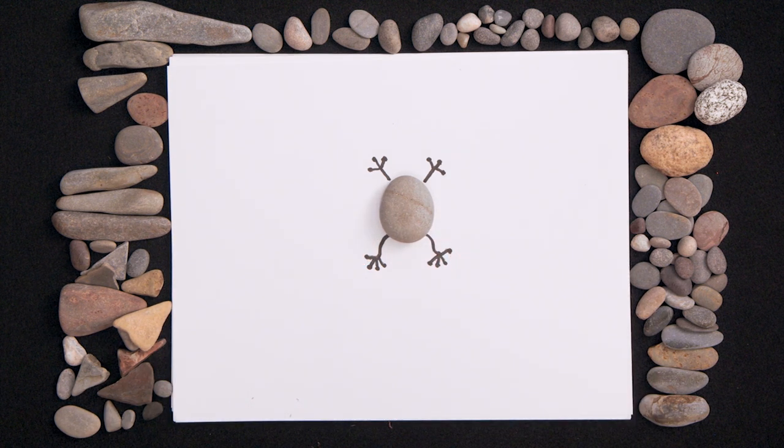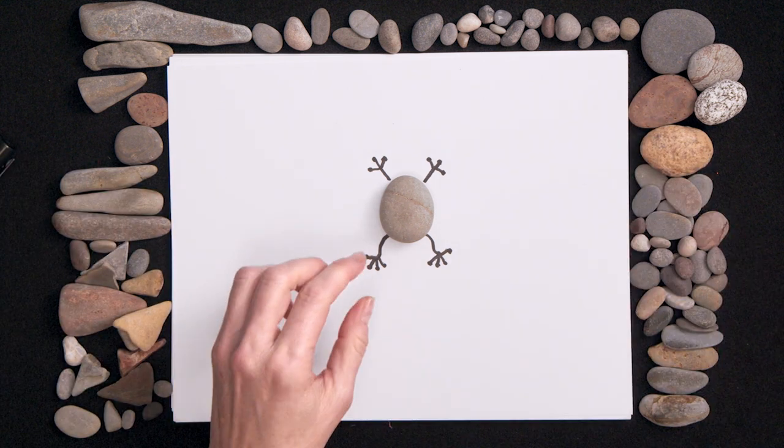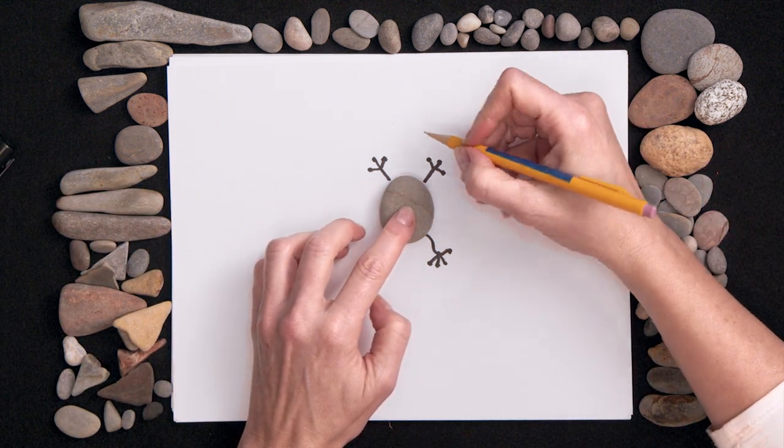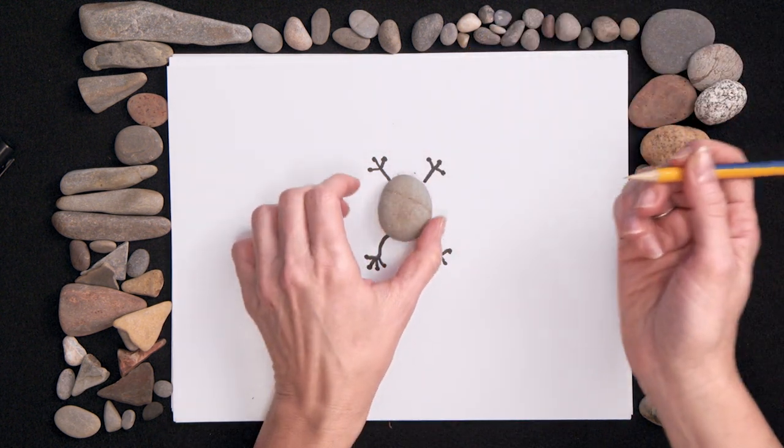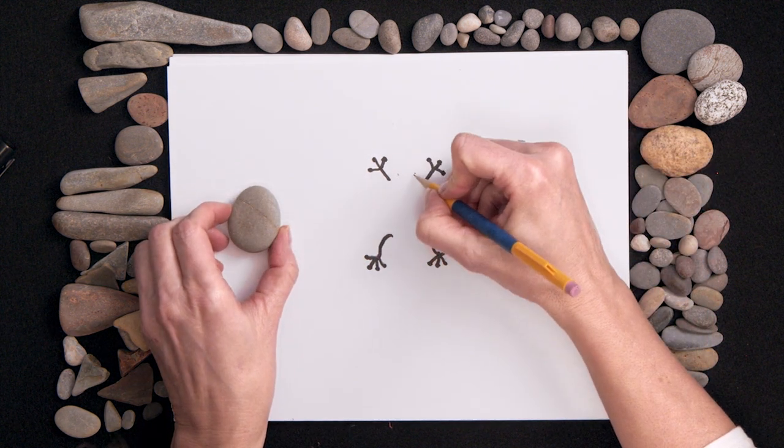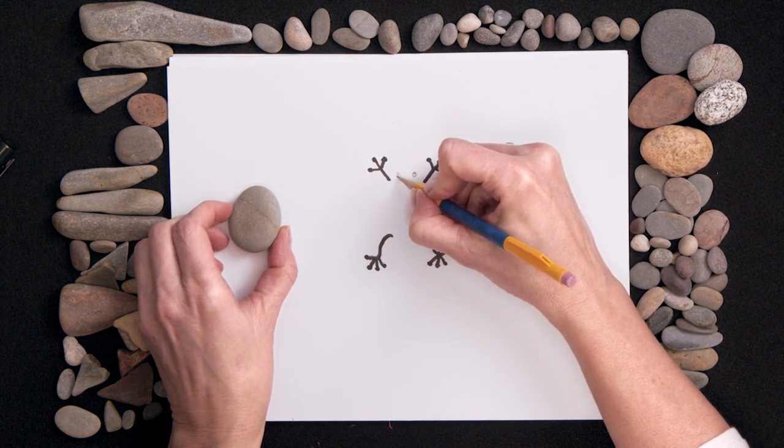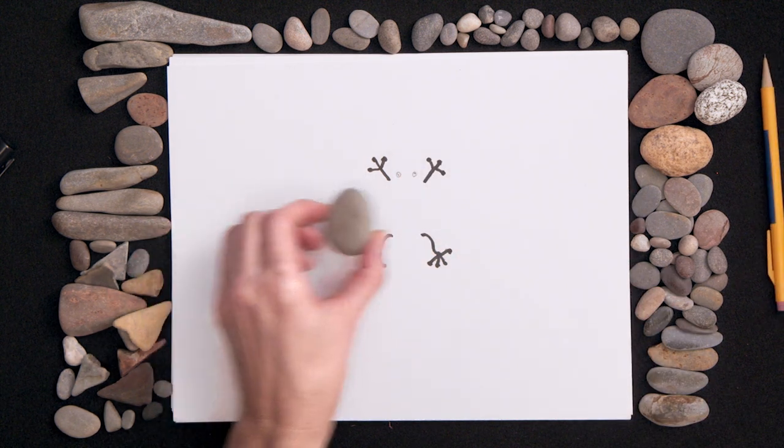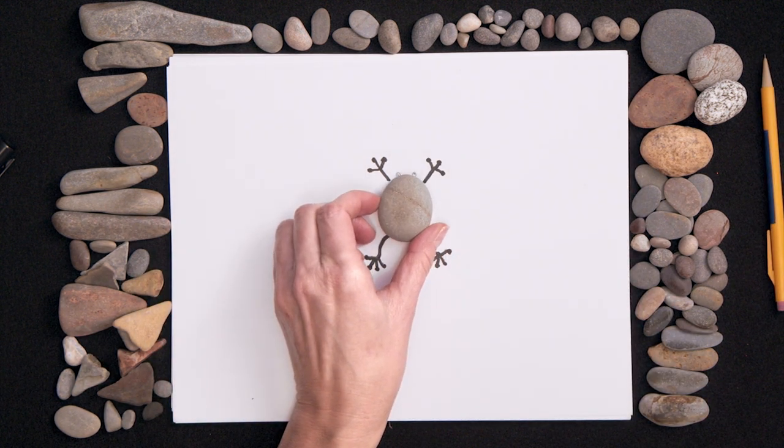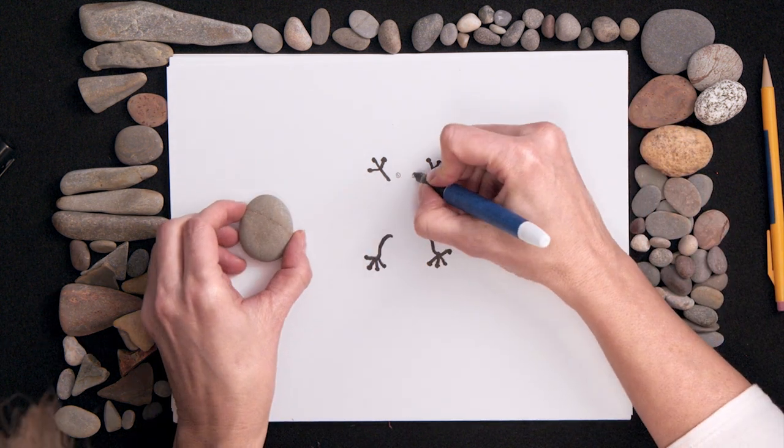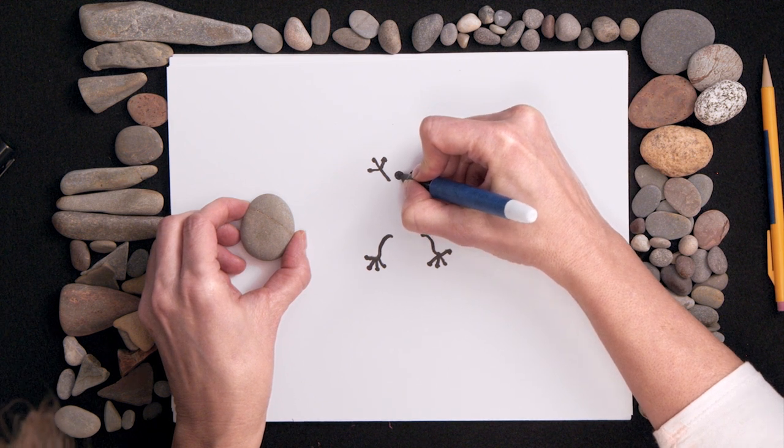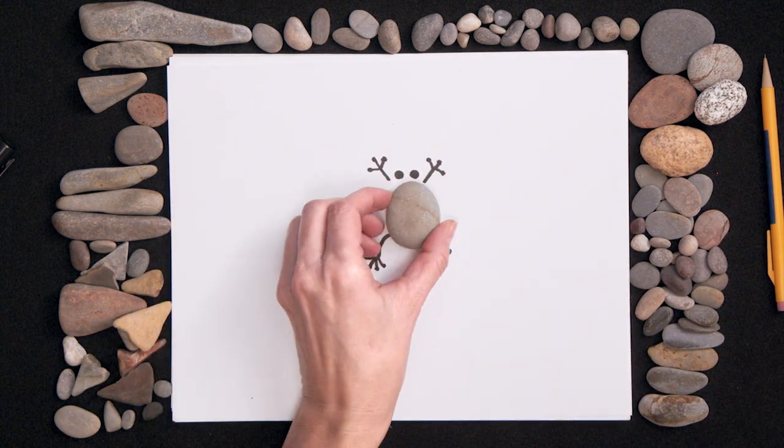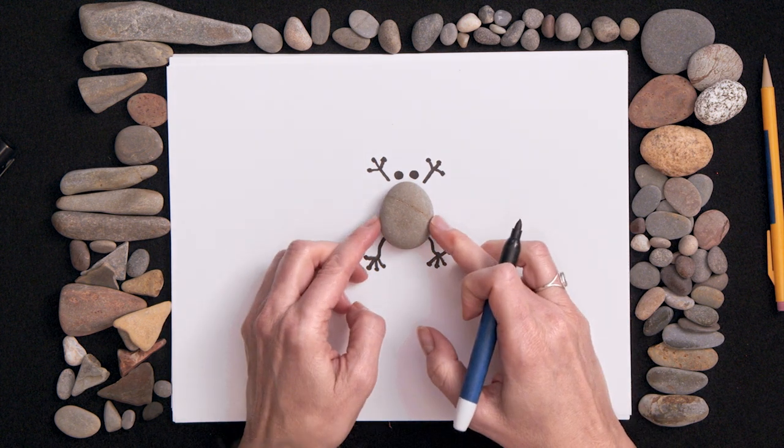If you put some eyeballs on the frog, it gets even cuter. So let's just add those. I'm just going to put a dot here and a dot here where I want the eyes, and I can take the rock away, and then I can put circles for those eyes. And now that I like where those are, once I put the frog back on, I can use the marker, and we'll draw those eyes. Just circles, just a little ball, and then we'll put our rock back on. Oh, my goodness, that's so cute.